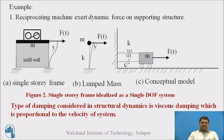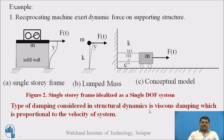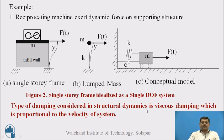This conceptual model represents a single-story frame idealized as a single degree of freedom system. The type of damping considered in structural dynamics, and in this example, is viscous damping, which is proportional to the velocity of the system.